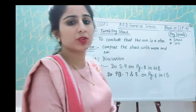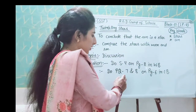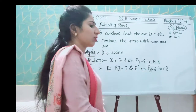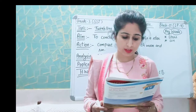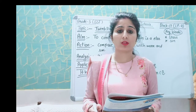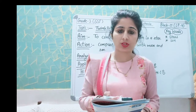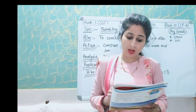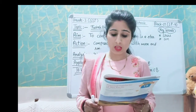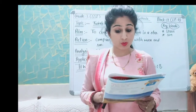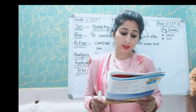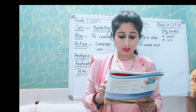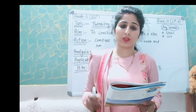Now for today's homework: do practice questions number 7 and 8 on page number 6 in your content book. Question 7: why is the sun called a star? Question 8: among the sun, moon and stars, which is closest to the earth? Also answer: why do stars look smaller than the moon?